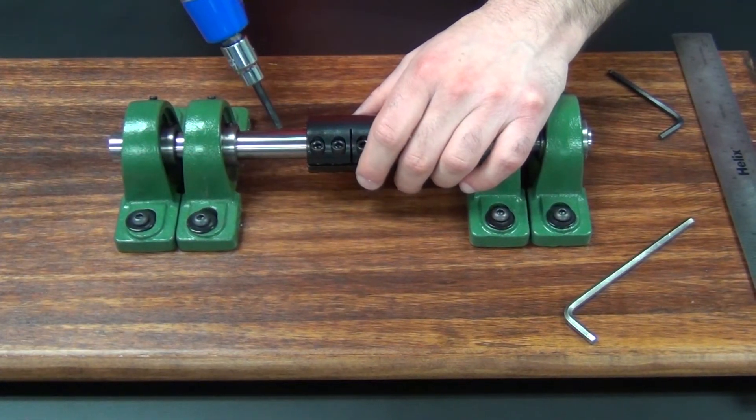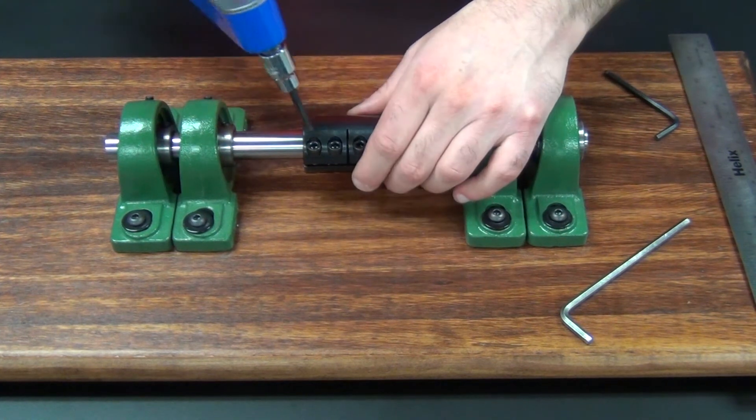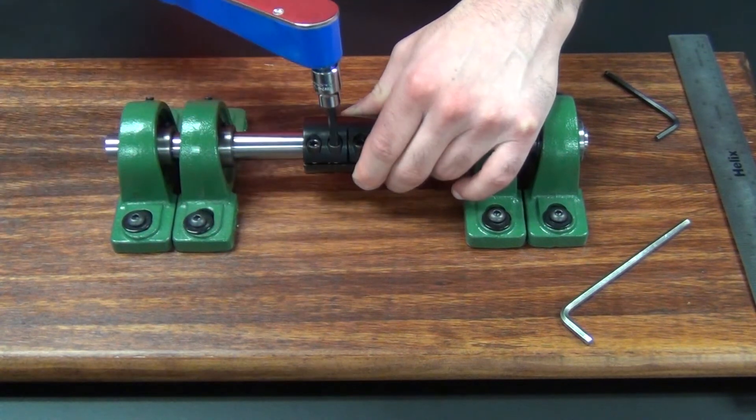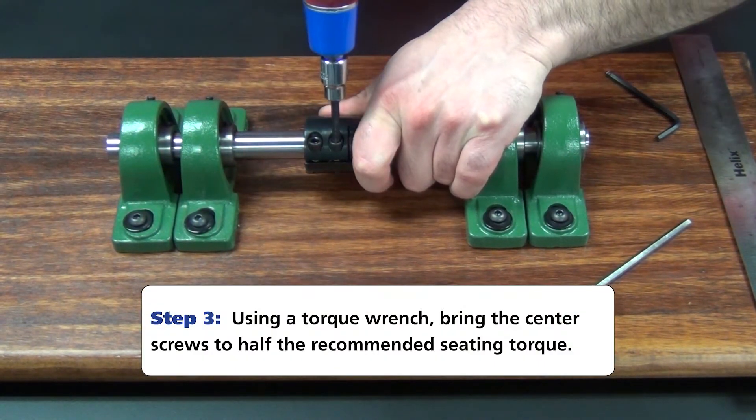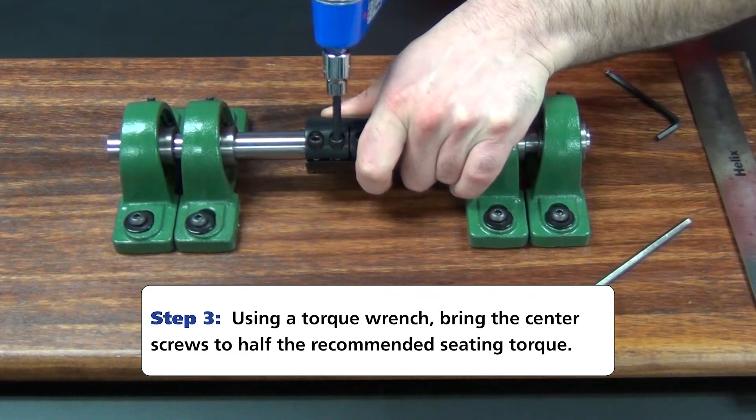I'm now going to install per rule and manufacturing instructions which say to install the two inside screws on both sides to half the recommended seating torque of 85 inch-pounds. That's good.